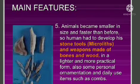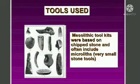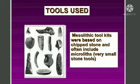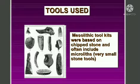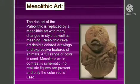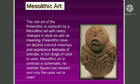There was also some personal ornamentation and daily use of materials such as a comb. Looking at the tools used — Mesolithic tool kits were based on chipped stone and often included microliths. Microliths means very small stone tools.